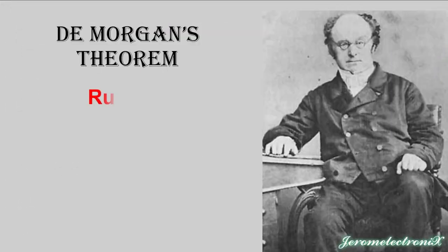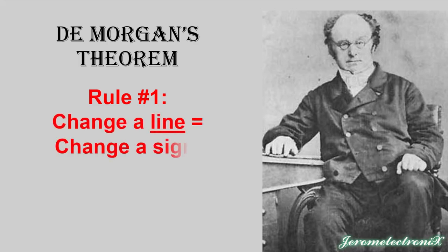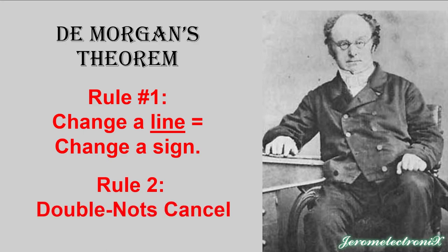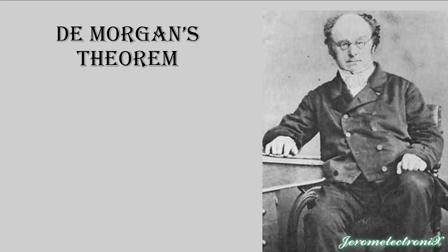DeMorgan's Theorem — bubble pushing. He introduced us to the shortcut we call DeMorgan's Theorem, and sometimes we use the phrase 'demorganizing.' The two rules he came up with were: if you change a line, change the sign, or inversely, if you change the sign, you have to change the line. Rule number two: double NOTs cancel. If you ever see two NOTs together, they can annihilate, or you can add two NOTs and use them if you need them. We'll do that in this presentation.